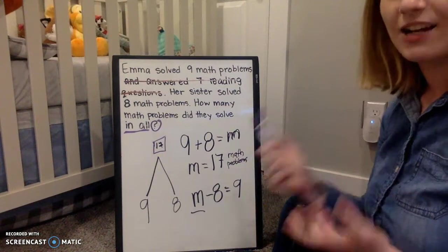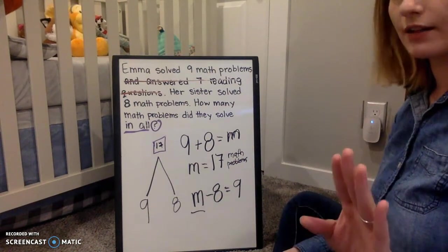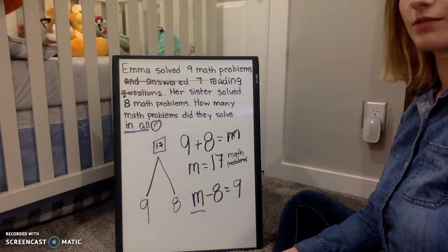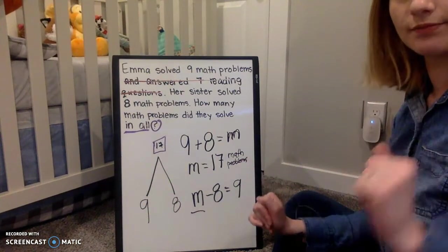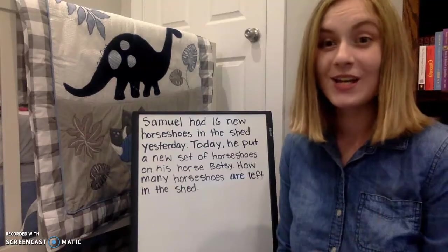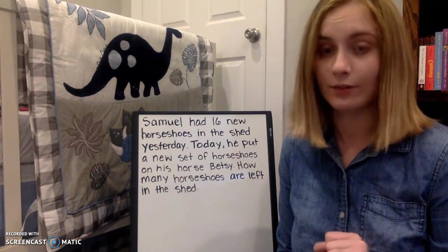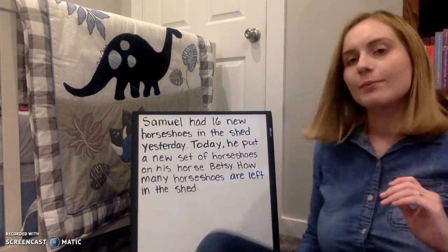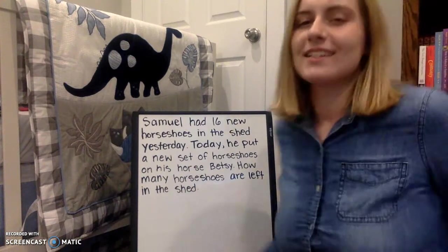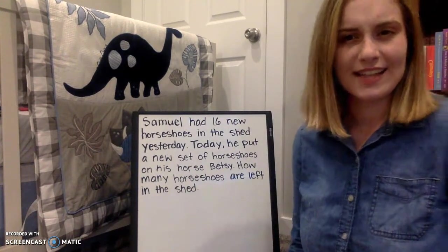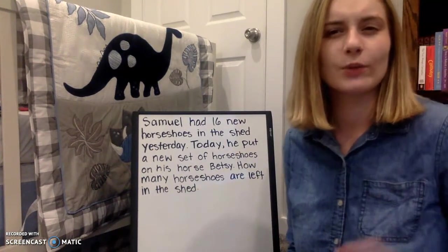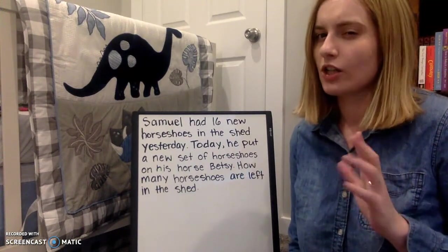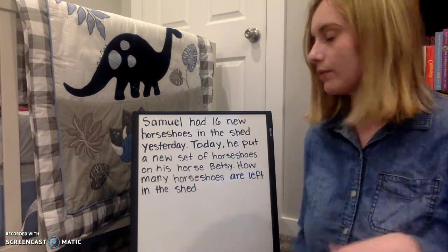Remember, if there's extra information in a problem, don't get tricked. Just know you don't need that information — cross it out. So that was extra information. Now let's talk about hidden information. Hidden information is those things that they say in a problem that don't give you quite enough to know exactly what the number is. Let's read the next problem and I'll talk more about what I mean.